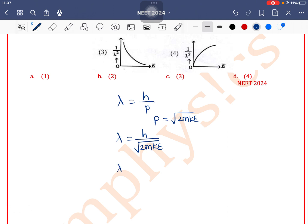Take square on both sides. So lambda square is equal to H square by 2m into kinetic energy. So E is equal to H square by 2m into 1 by lambda square.